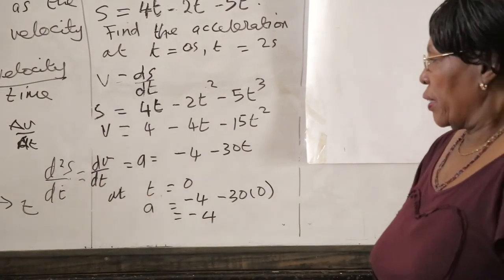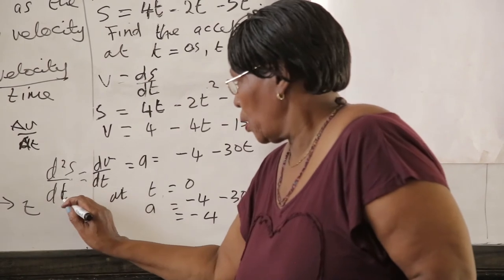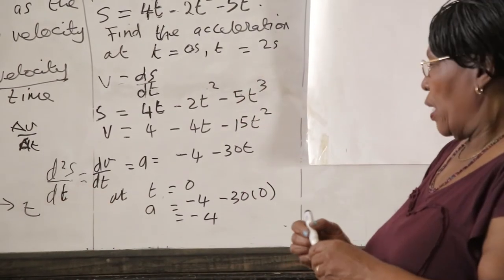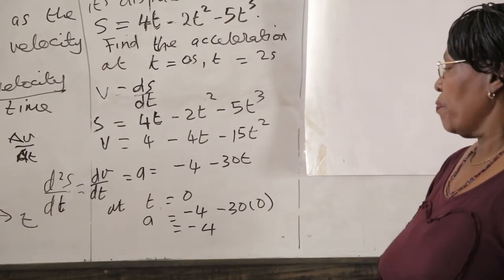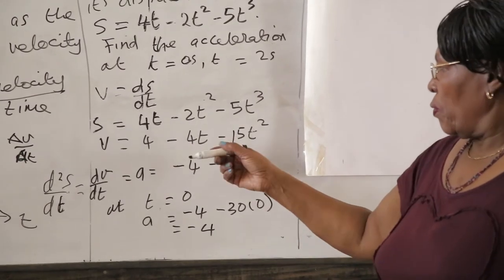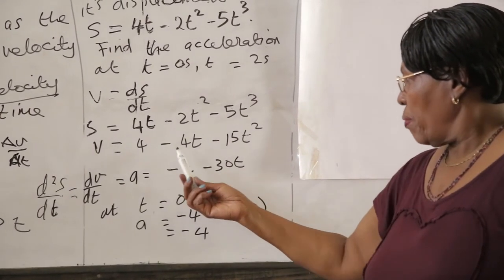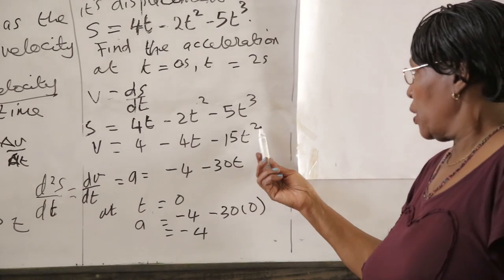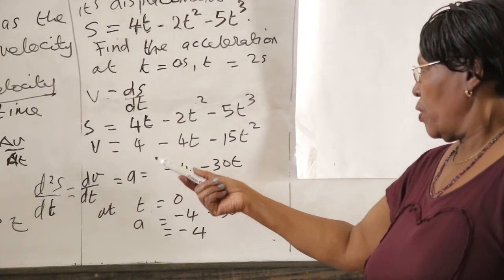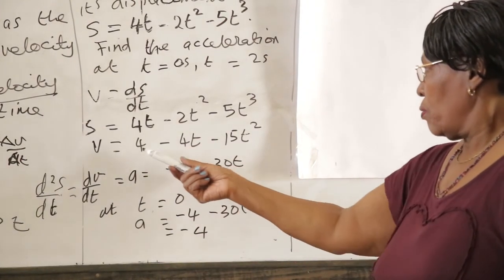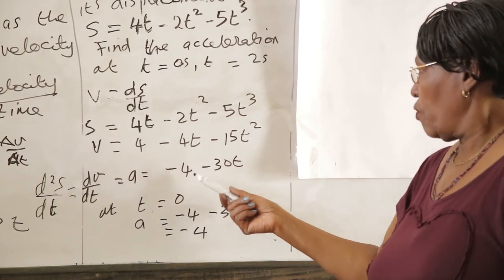So we can see that, sorry this is t. We can see that at t is equal to 0, the derivative of 4 minus 4t minus 15t squared, A therefore is equal to, this gives us 0 minus 4 minus 30t.